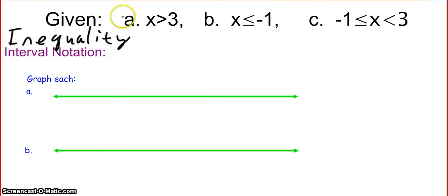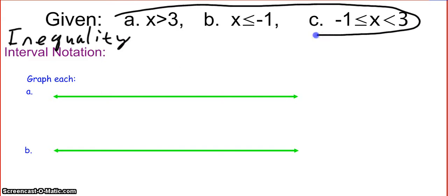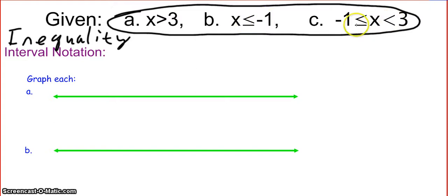So, inequality — that's what these are. Those are inequalities. Why are they inequalities? Because they don't have equal signs. Even though some of them could be equal to, like a less than or equal to, they are not equations, but they still give a relationship, or a set of numbers, basically. So now let's talk about interval notation. Interval notation is a different way to write an inequality, but it provides the same information.